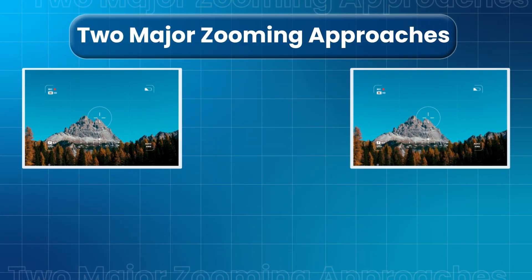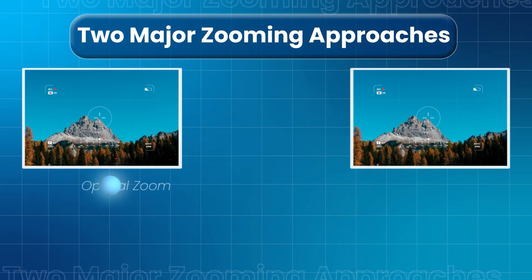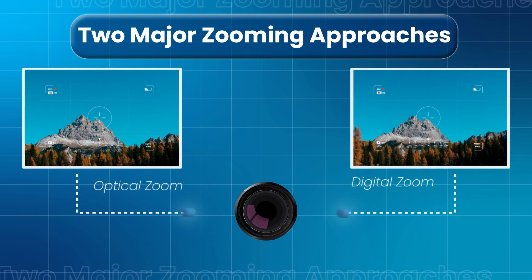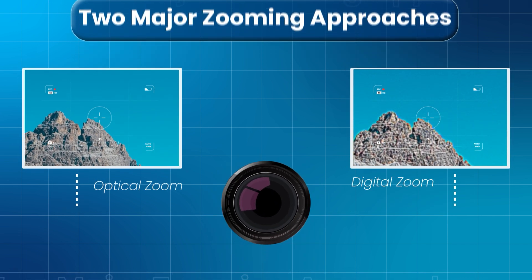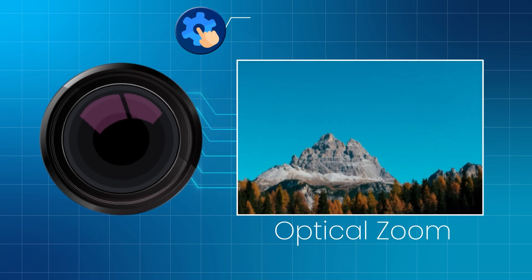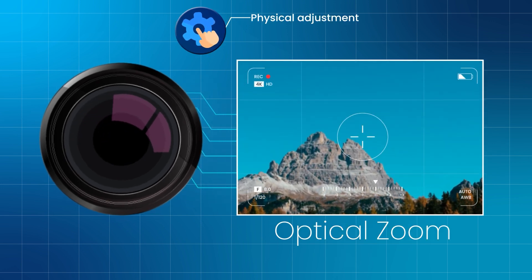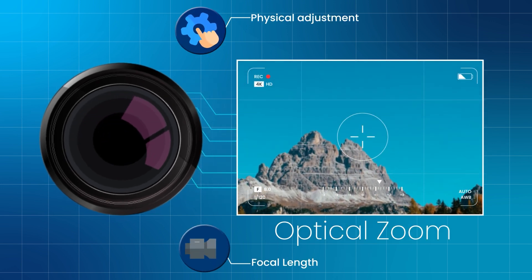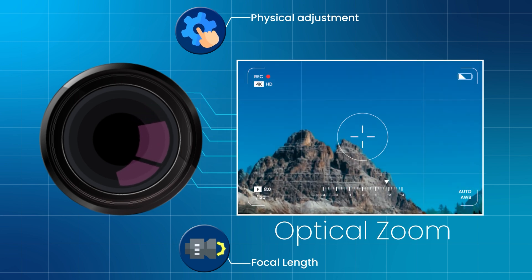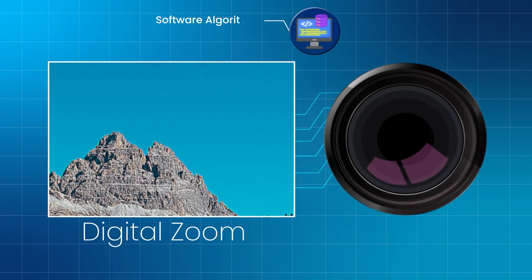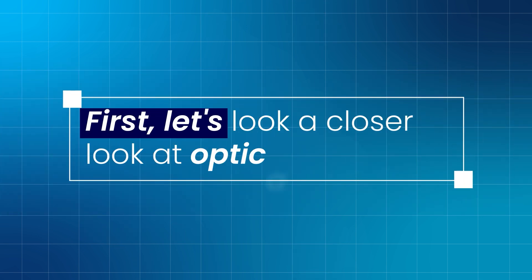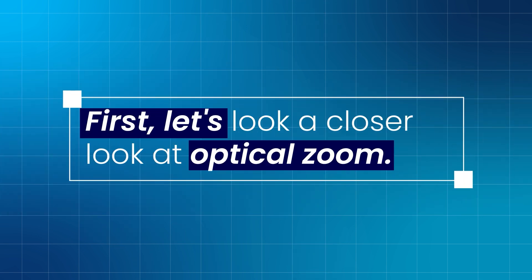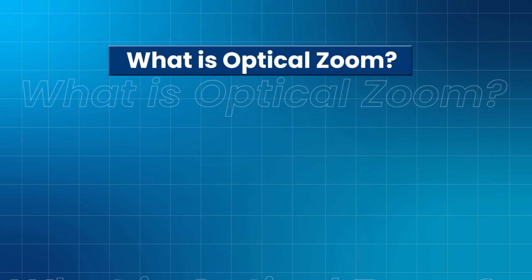Optical zoom and digital zoom are two primary approaches to magnification in camera technology. Optical zoom relies on the physical adjustment of lens elements to change the image's focal length. In contrast, digital zoom uses software algorithms to crop and enlarge the image.